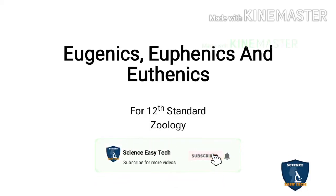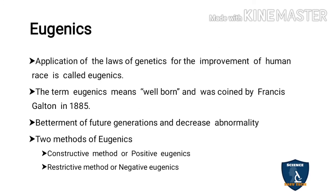Today we are going to see about eugenics, euphenics, and euthanics. Eugenics is the application of the laws of genetics for improving the human race. The term eugenics means 'well born' and it was coined by Francis Galton in 1885. Eugenics is applied for the betterment of future generations and to decrease abnormalities in the human race.